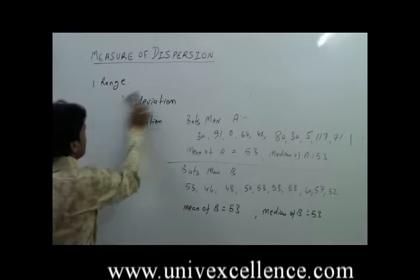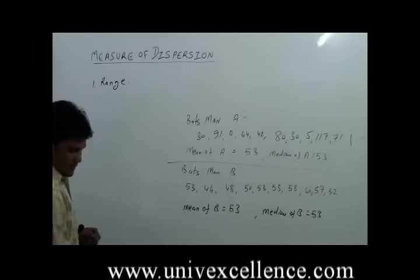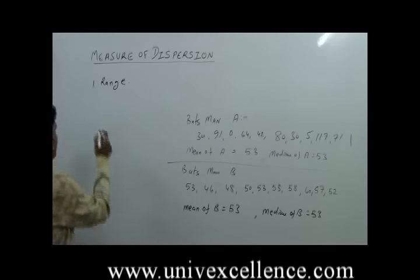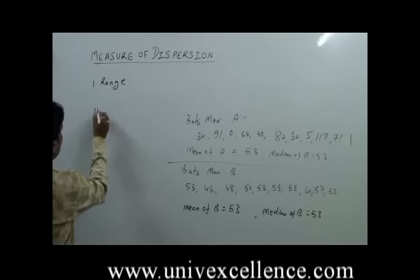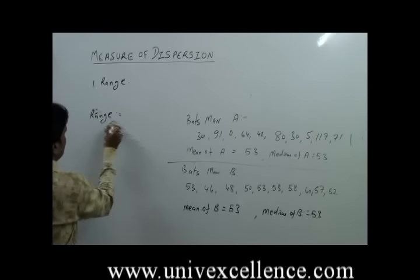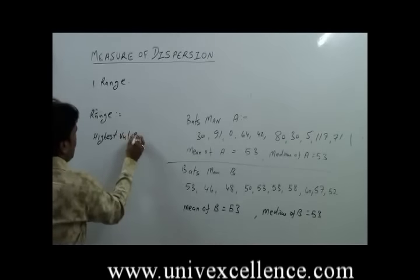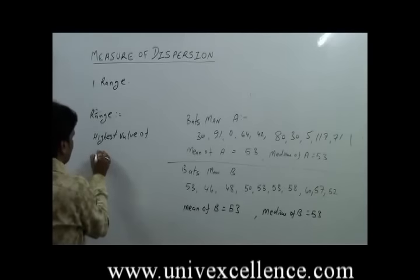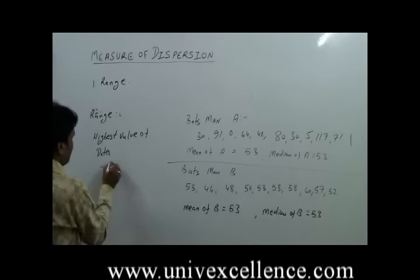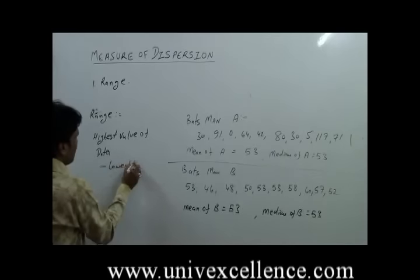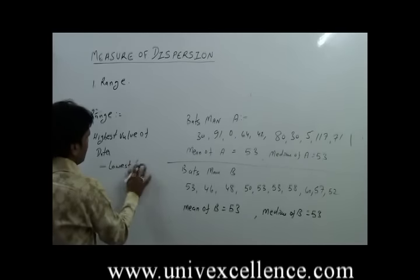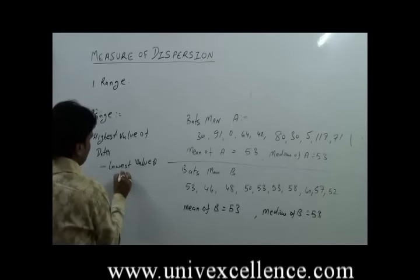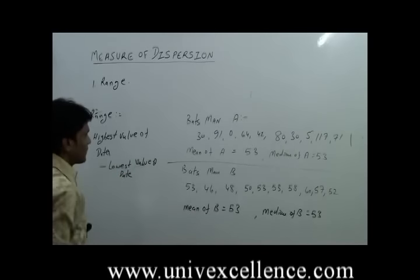First we will discuss about the Range — how we can find out the range of the data. Range can be found out by the highest value of the data minus the lowest value of the data. The formula for finding out range is: Highest Value of Data minus Lowest Value of Data.